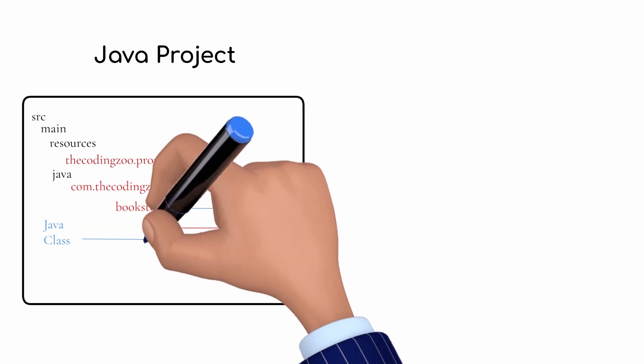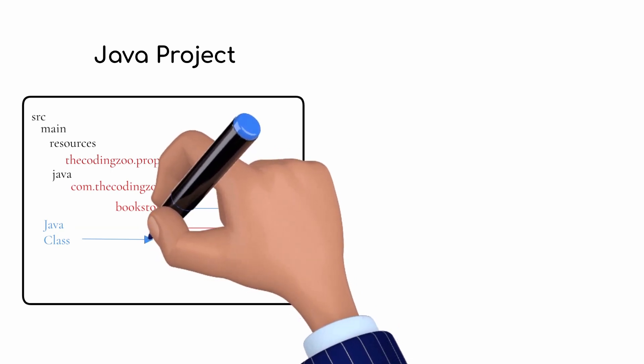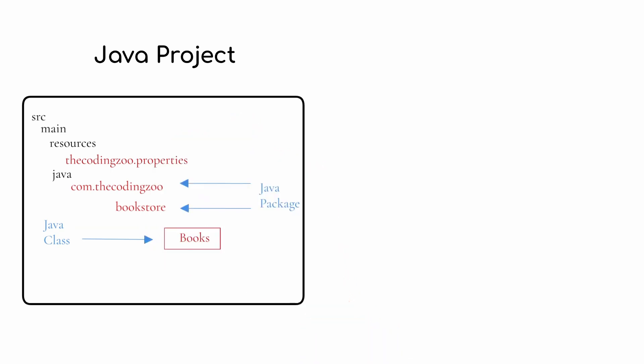A Java class usually has a context and represents something real, like in this case a book. This is how the structure of your project would look inside of an IDE — you would have folders, packages, and classes. Now let's take a look at how it would look inside of your Windows file system.